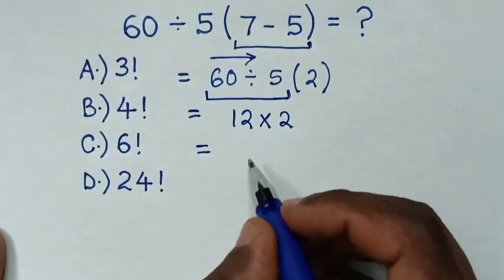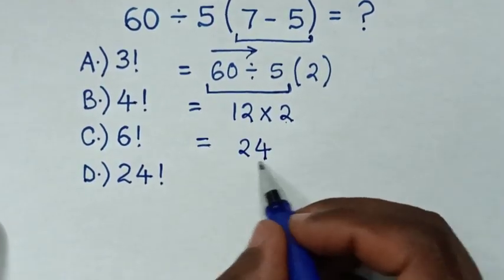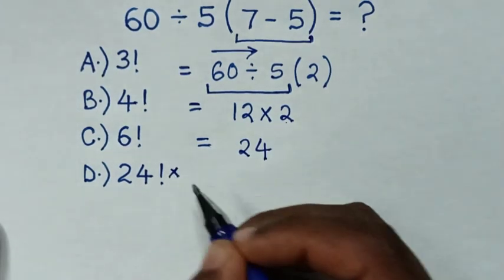Then, it will be equal to, 12 times 2 is 24. Now, in here we have 24, this is 24 factorial, so this is not correct.